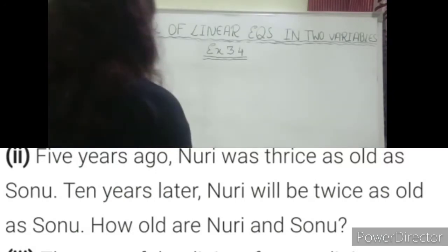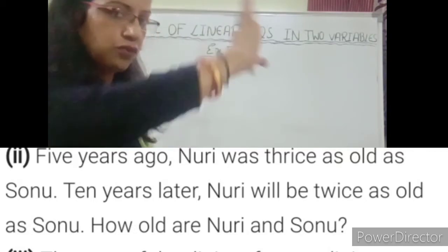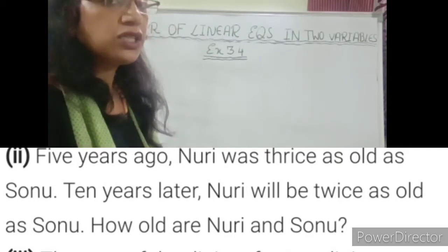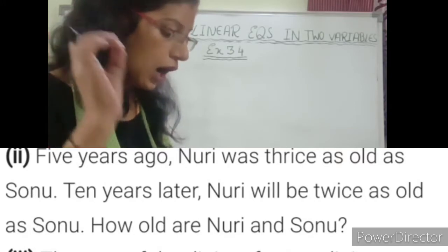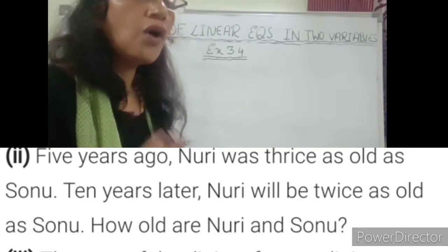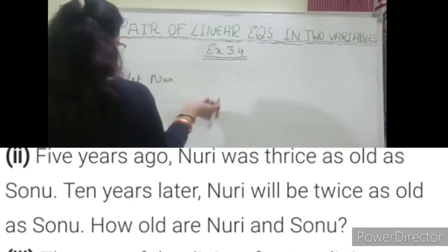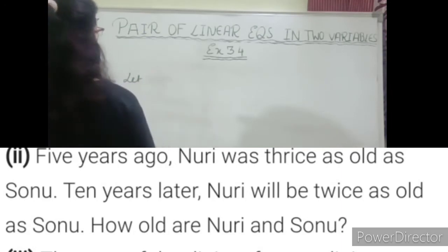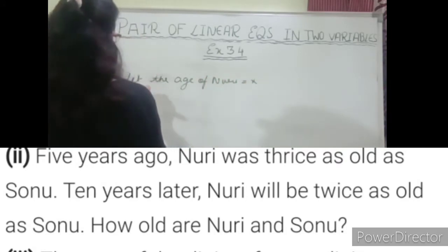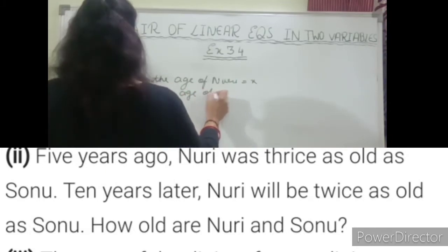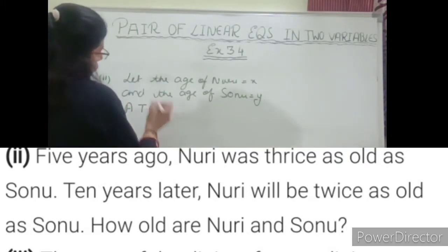The second part: five years ago, Nuri was thrice as old as Sonu. Ten years later, Nuri will be twice as old as Sonu. We want to find how old Nuri and Sonu are. Let the present age of Nuri be x and the present age of Sonu be y.